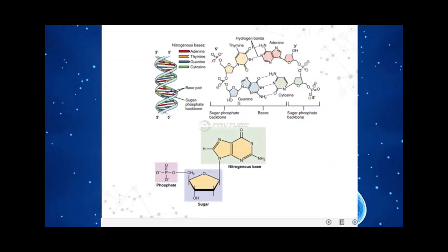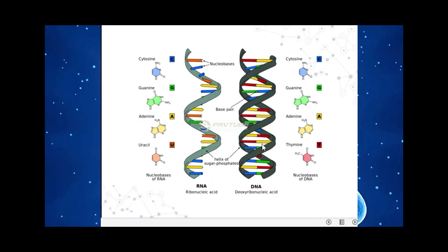Each nucleotide has three components: a phosphate region, a sugar, and nitrogenous bases. The nitrogenous bases are adenine (A), thymine (T), guanine (G), and cytosine (C). In the double helix, the bases pair via hydrogen bonds: A always pairs with T, and C always pairs with G. In RNA, there is a slight difference — RNA does not have thymine; instead it has uracil.